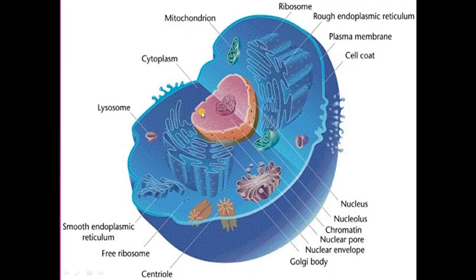You can see here a typical cell. First of all, the plasma membrane — around the cell there is a thin envelope that covers the whole cell, and that is called the plasma membrane, also called the cell membrane. Inside the cell there is a gel-like substance called cytoplasm, and in the center there is a round body called the nucleus.